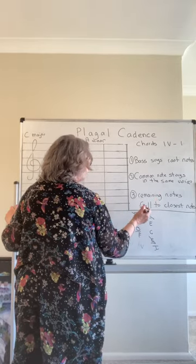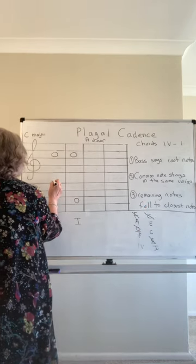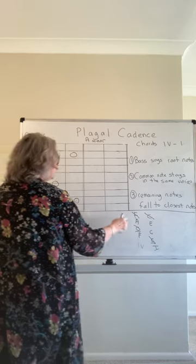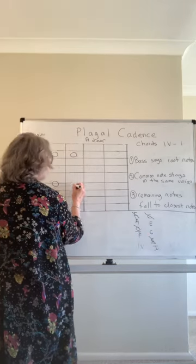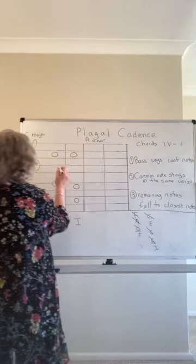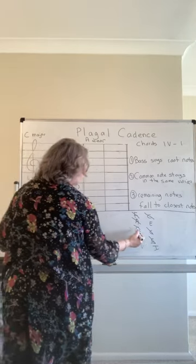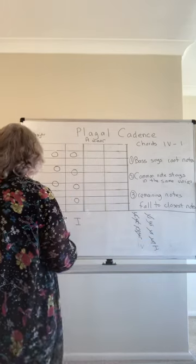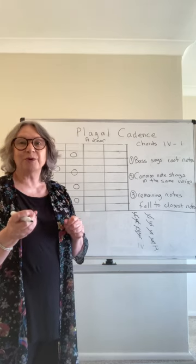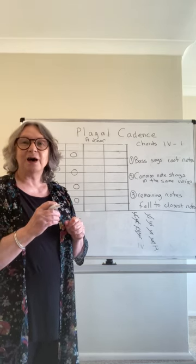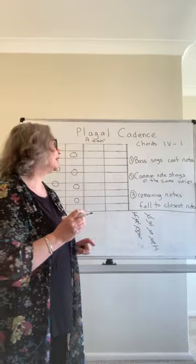The remaining notes should fall to their closest note. We put A in the tenor — A's closest note to fall to is G. And F in the alto, falling to E. If you follow these suggestions you won't break any rules — no consecutive fifths or octaves — which we'll discuss more when we do harmony to a given melody.